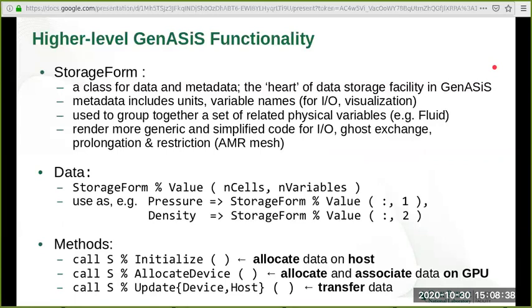In Genesis, the heart of our data storage facility is a class called StorageForm. This class has data and metadata as its members, and the metadata can include units, variable names for I/O and visualization. We use this class to group together a set of related physical variables, for example, the fluid variables.